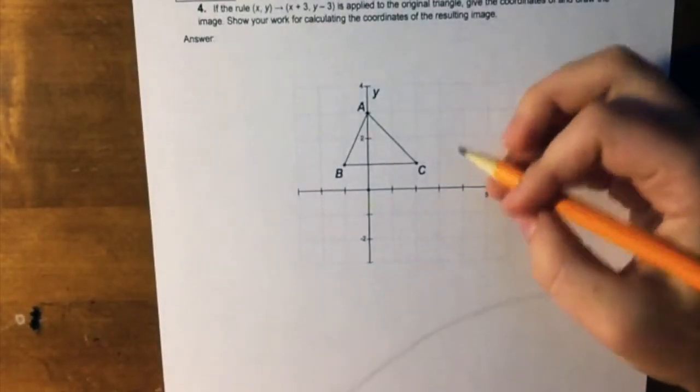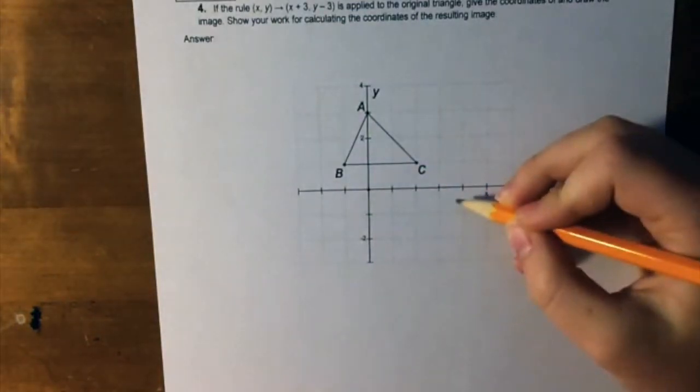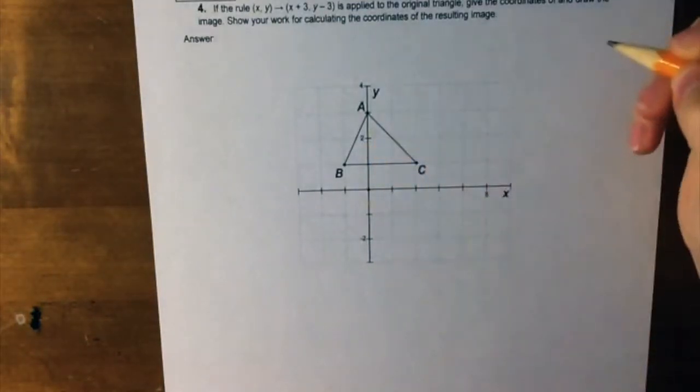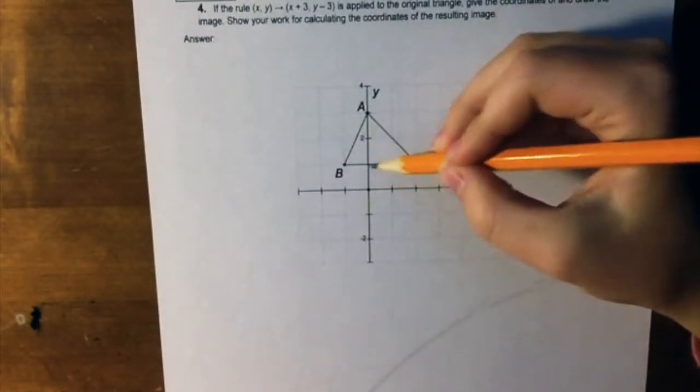All you've got to do is you take your x, which is this coordinate right of this plane, and you move it over. You move it plus 3, so this one goes one, two, three.